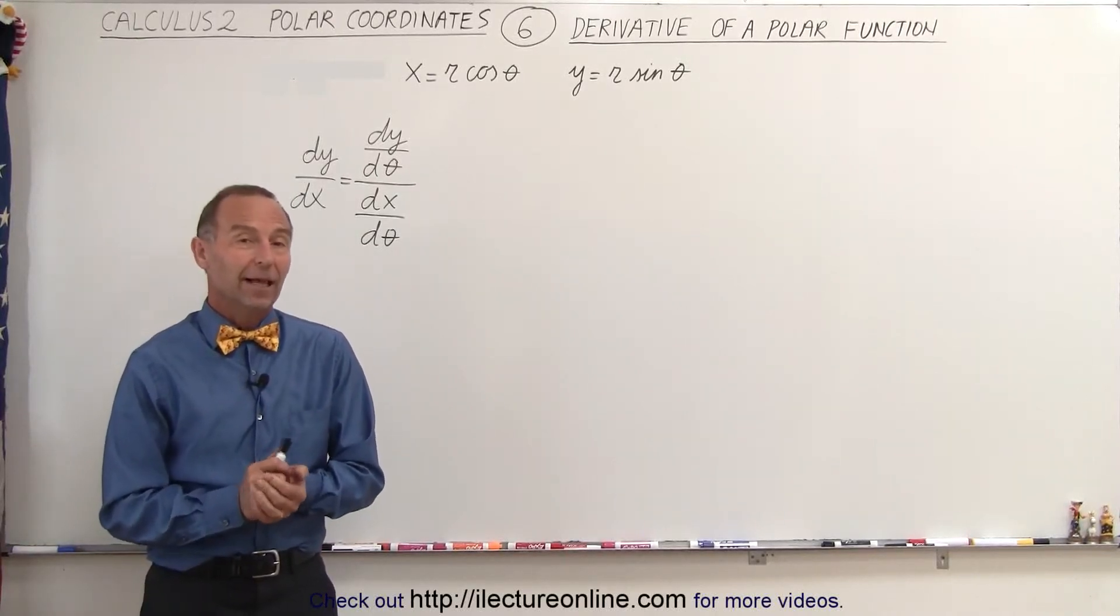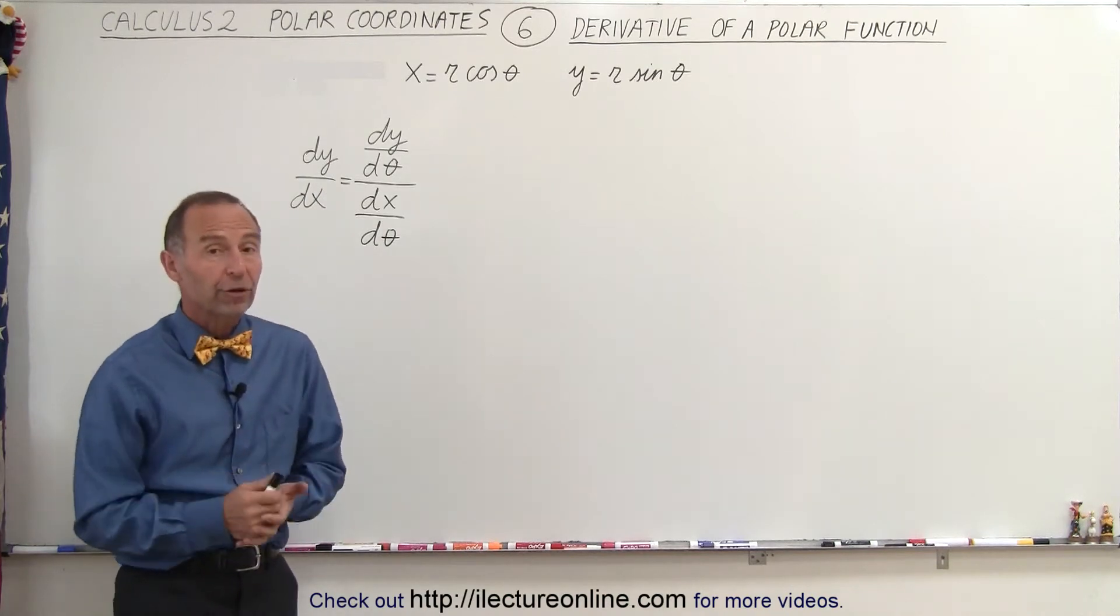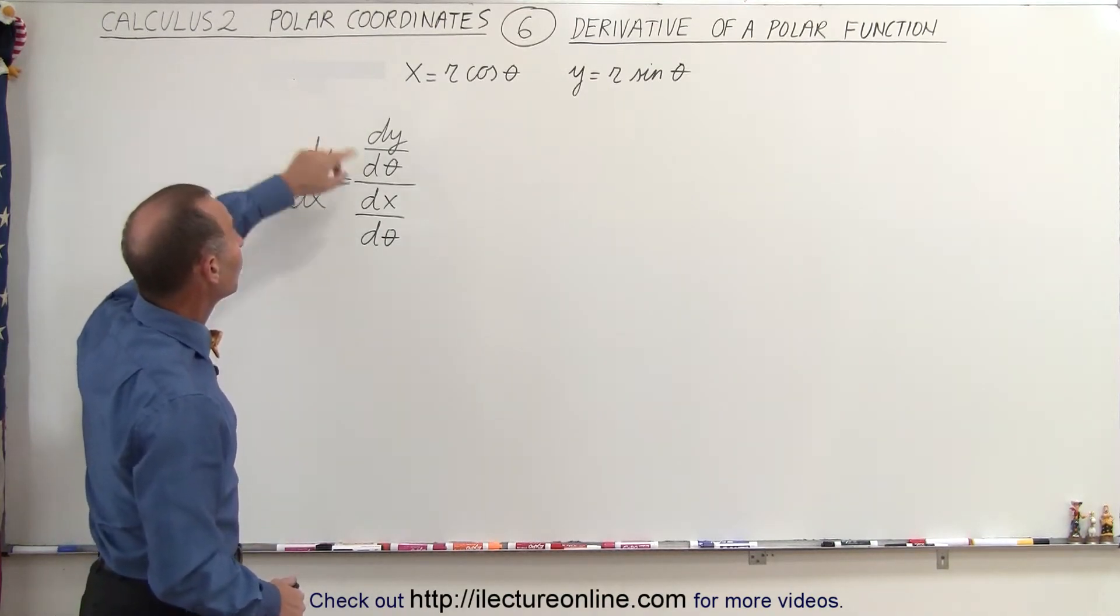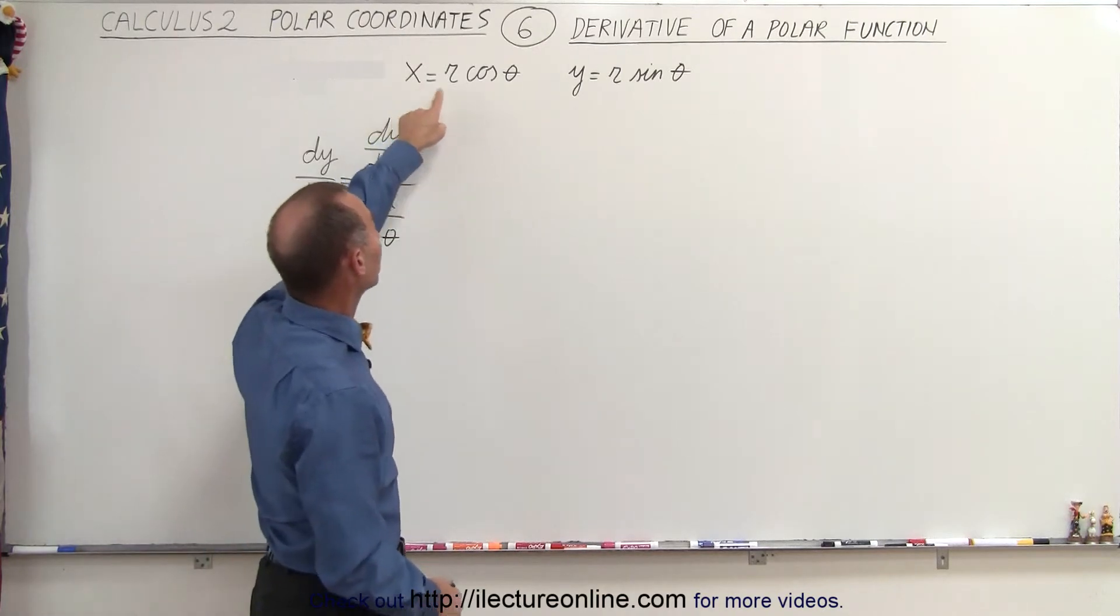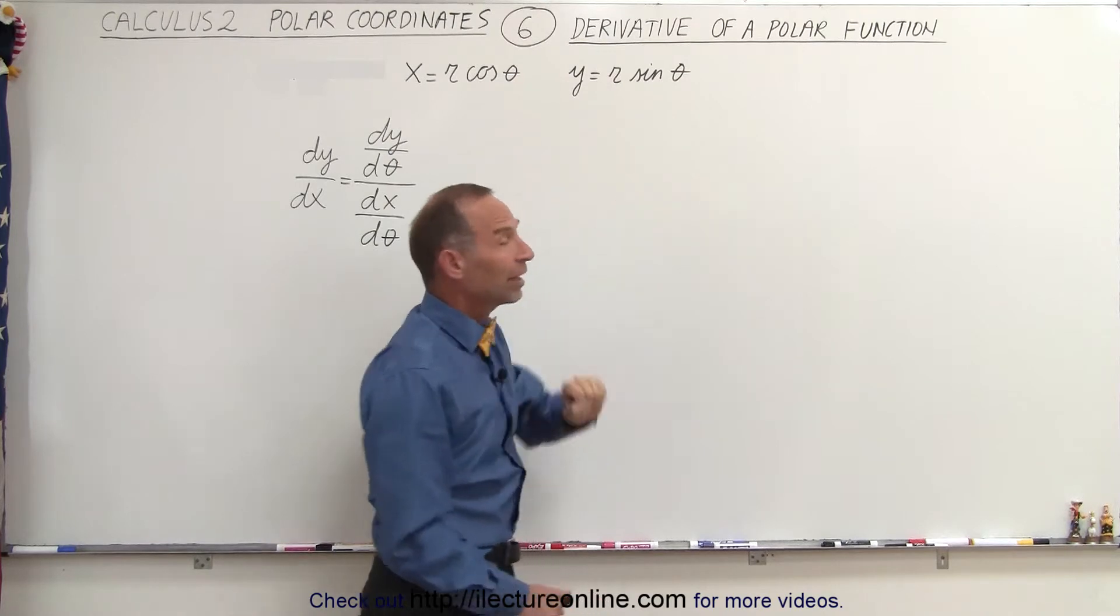Welcome to our lecture online. Now let's take a look at how we find the derivative of a polar function. For example, if we want to represent a circle using the parametric equations x equals r times cosine of theta and y equals r times sine of theta,